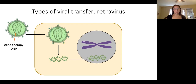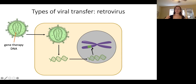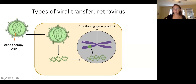The second form of viral transfer is similar but has a twist — it uses retroviruses, like HIV. You put your gene therapy genetic material into the viral shell, the virus enters the cell, releases its genetic material into the nucleus, but here the key difference is that this genetic material wants to directly integrate into the chromosomes — into the genome of the cell — from where it gets transcribed and translated into your functioning gene product.